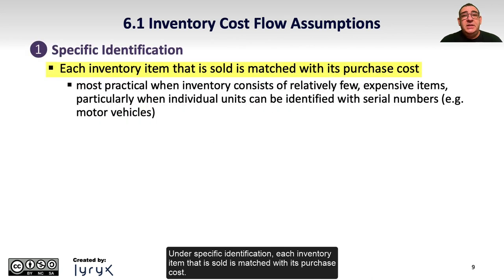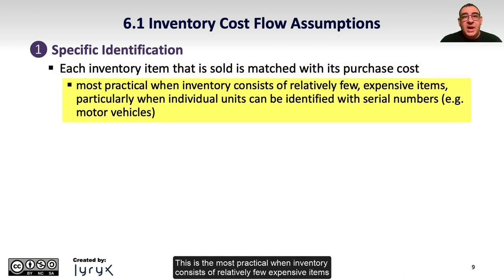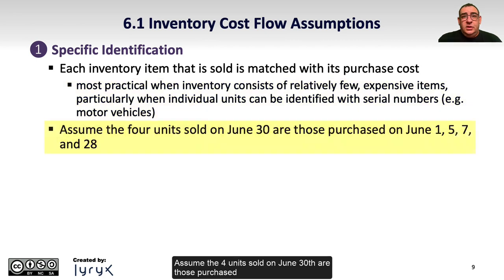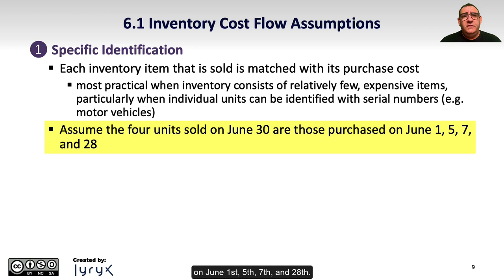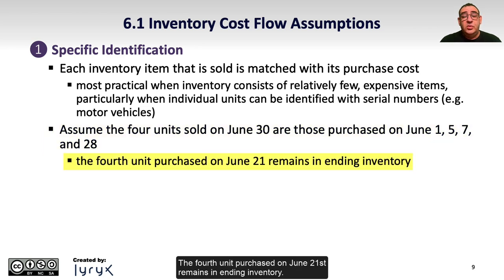Under specific identification, each inventory item that is sold is matched with its purchase cost. This is most practical when inventory consists of relatively few expensive items, particularly when individual units can be identified with serial numbers like a car. Assume the 4 units sold on June 30 are those purchased on June 1, 5, 7, and 28. The 4th unit purchased on June 21 remains in inventory.